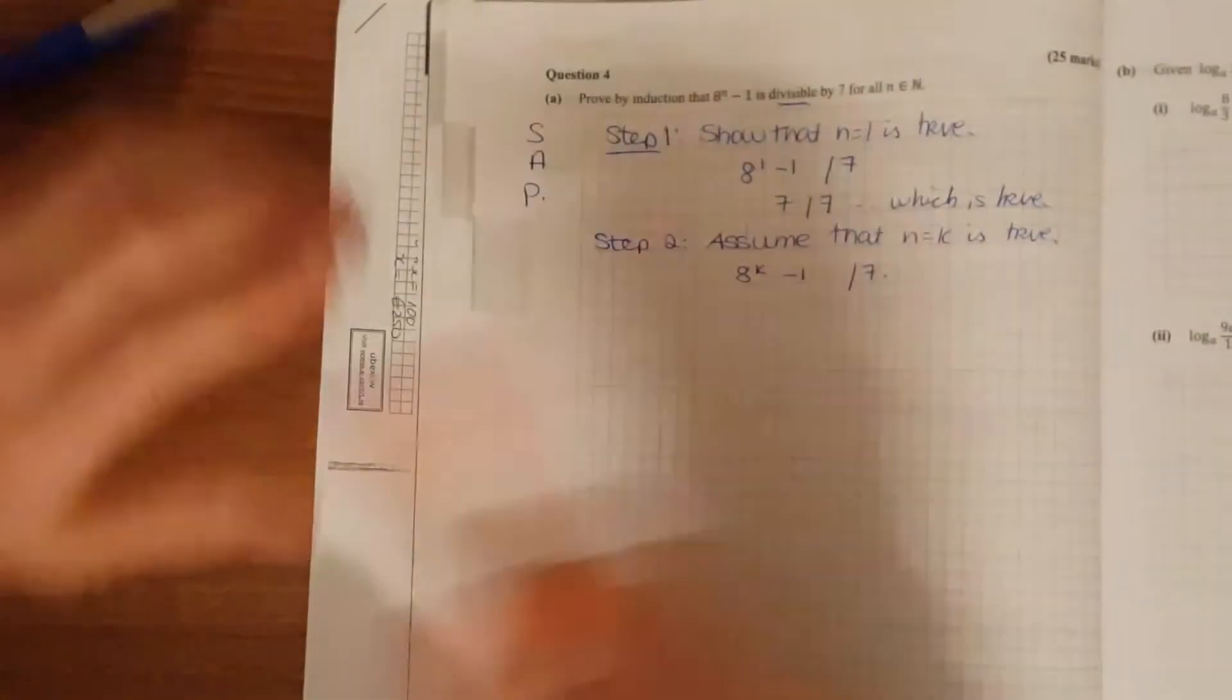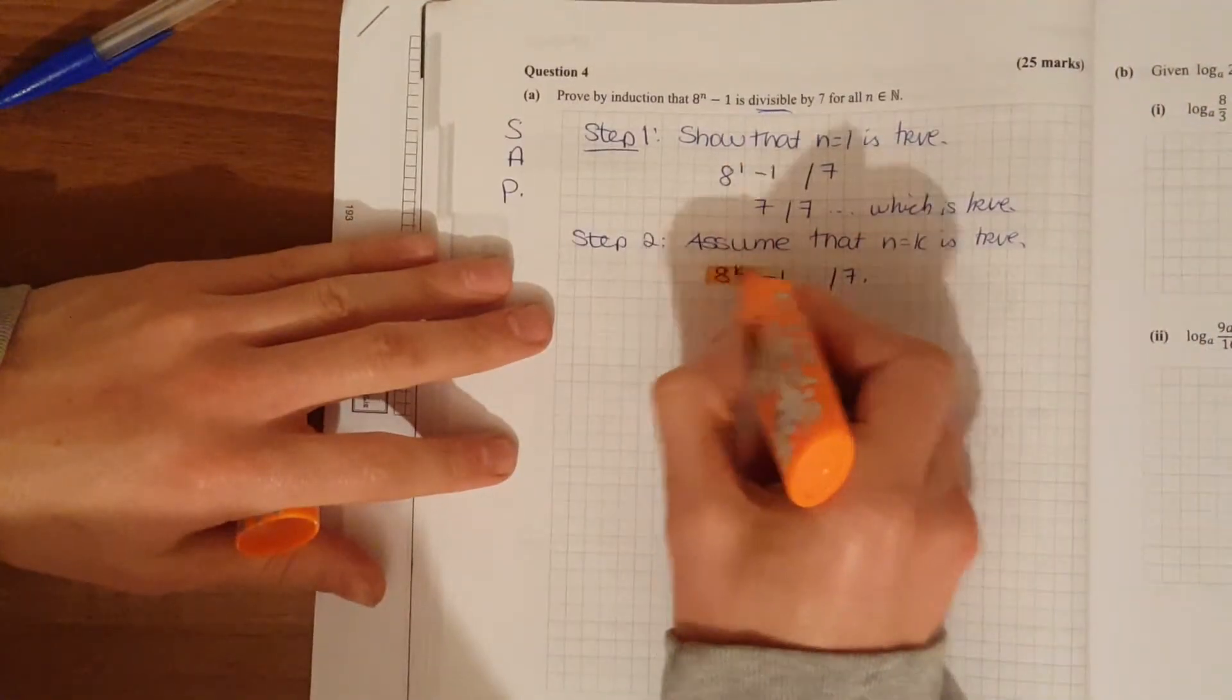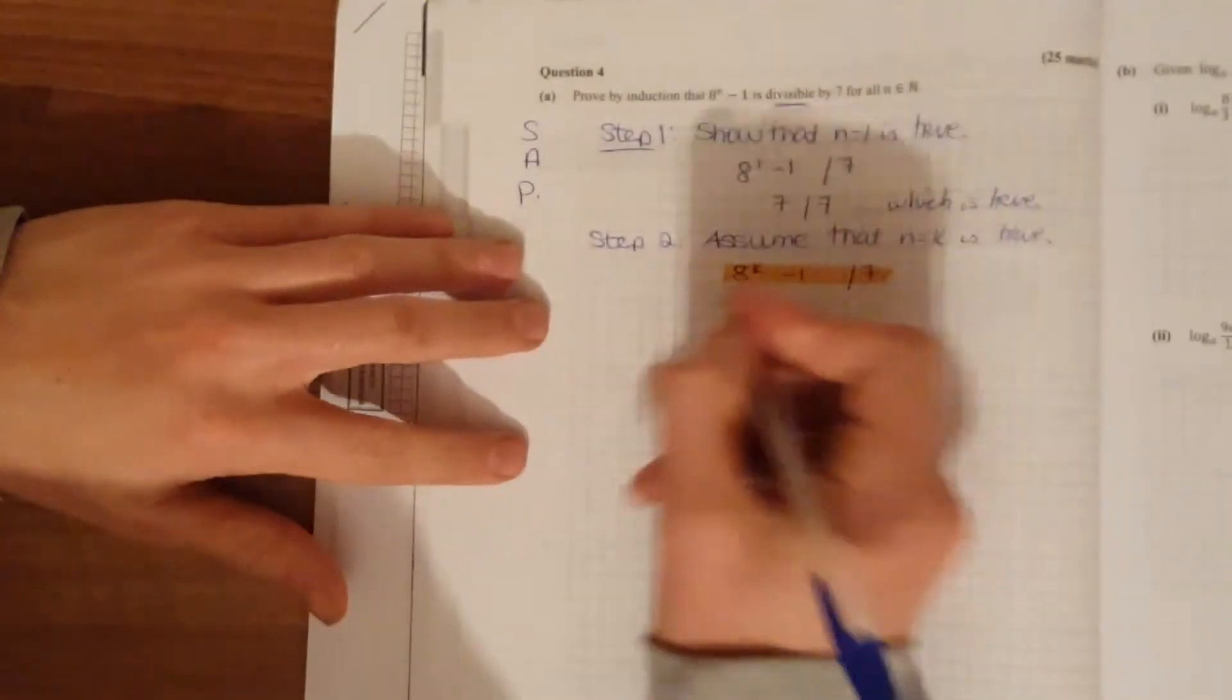Divisible by 7. Now we always go back to the assumption. Always go back to the assumption from your next step.